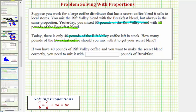We'll solve this problem using a proportion where we set up two ratios comparing the amount of Rift Valley blend to the amount of breakfast blend. For the first ratio, because you mix 60 pounds of the Rift Valley blend with 18 pounds of the breakfast blend, our first ratio will be 60 to 18.